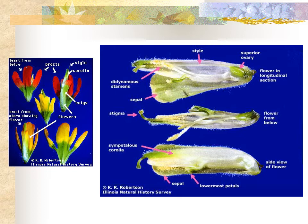Returning to the genus Castilleja — the paintbrushes — the important thing to note is that the bright, showy parts of this plant are not actually the flowers, but are colorful bracts. The flowers are hidden within those bracts and are actually quite inconspicuous, with green sepals and green petals.